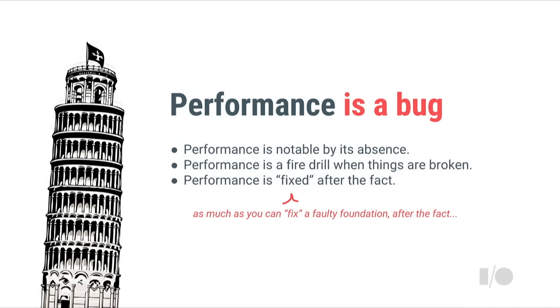Performance is a bug: most of the time, performance is notable by its absence. You've accrued enough technical debt or something has gone wrong, things fell on the floor, users are complaining, the product manager is angry, and there's a fire drill to fix performance. Performance is fixed after the fact, in as much as you can fix a faulty foundation. I intentionally put the Tower of Pisa as a metaphor here — they can't actually make it straight, and they've literally poured tens of millions, if not hundreds of millions, of dollars trying to keep the building upright.